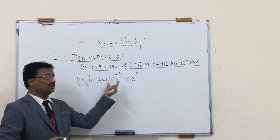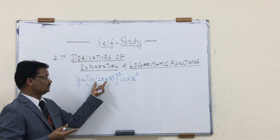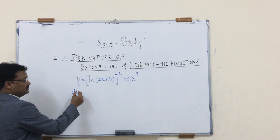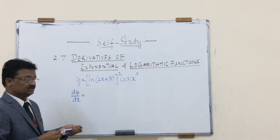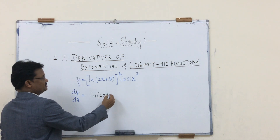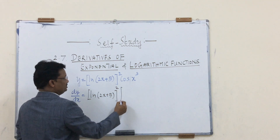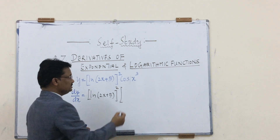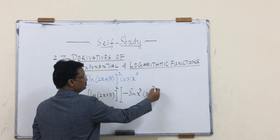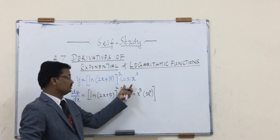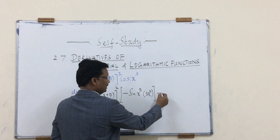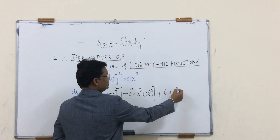We apply the product rule to differentiate y with respect to x. Write f = [ln(2x+5)]² as it is and differentiate g = cos(x³): the differentiation of cos(x³) is −sin(x³) times 3x², using the chain rule. Then plus g = cos(x³) as it is, ready to differentiate f.